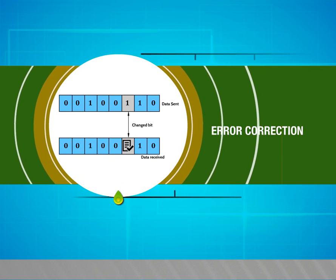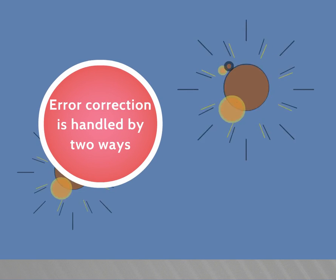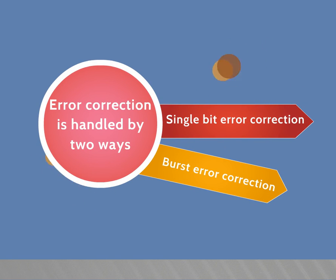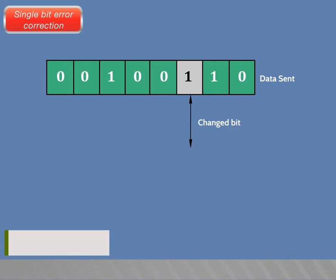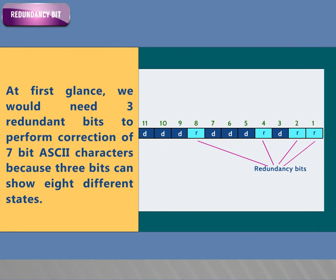Error correction. In this video, we are going to see about error correction. Error correction is handled by two ways: single bit error correction and burst error correction. For single bit error correction, consider an ASCII character of 7 bits. The situations that may occur are: no error, error in 1st bit, error in 2nd bit, and so on up to error in 7th bit. At first glance, we would need 3 redundant bits to correct 7-bit ASCII characters because 3 bits can show 8 different states.